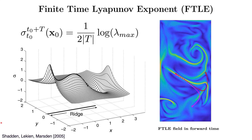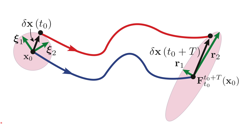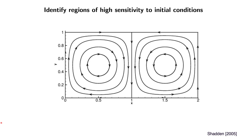In a two-dimensional flow, ridges will be 1D; in a 3D flow, ridges will be two-dimensional. If we imagine the phase space covered with many circular blobs, the FTLE field measures the maximum stretching of the circle into an ellipsoid, giving the linearized stretching.